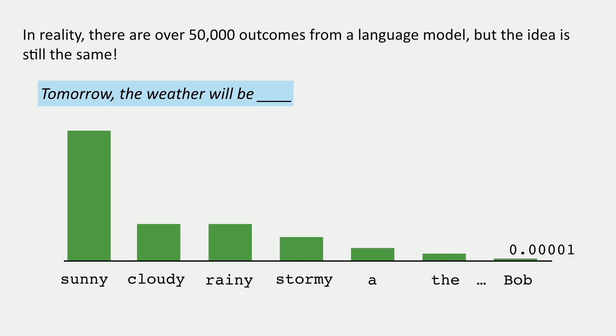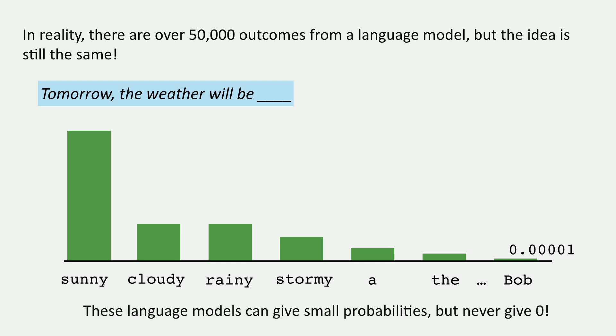We even have names in our vocabulary, so there's some chance of 'bob' coming next. An interesting fact about these language models is they can give very, very small probabilities to things, but they never actually give things a probability of zero. So 'tomorrow the weather will be bob' still has some chance of happening, but the model gives it very low probability if it's a good model like ChatGPT.